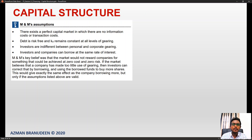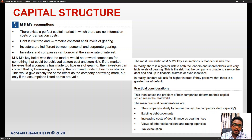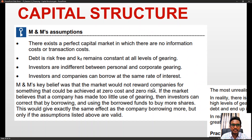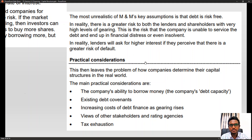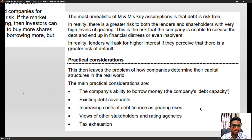You can review all these assumptions, and while the CIMA Strategic Case Study does not deal heavily in these theoretical areas, it is prudent to read them. In reality, lenders will ask for higher interest if they perceive a greater risk of default. The main practical considerations are: the company's debt capacity, existing debt covenants, increasing costs of debt finance as gearing rises, views of stakeholders and rating agencies, and tax exhaustion.